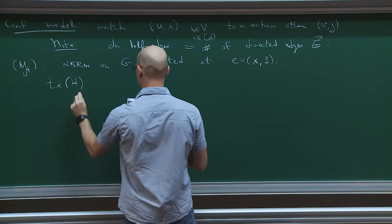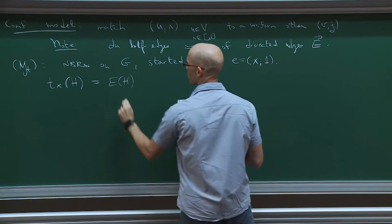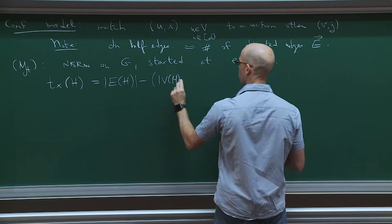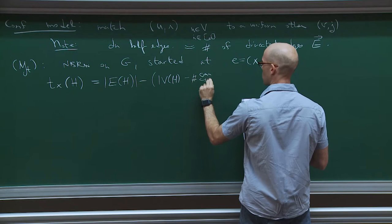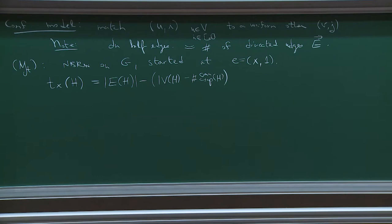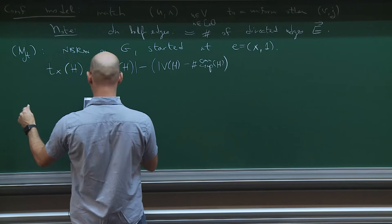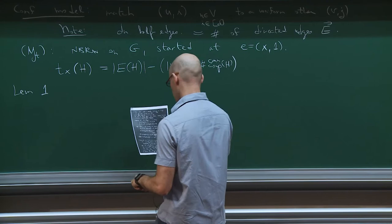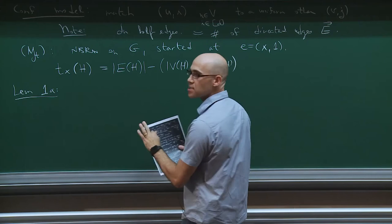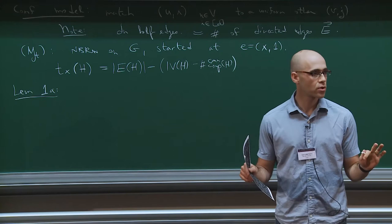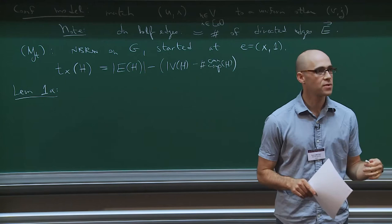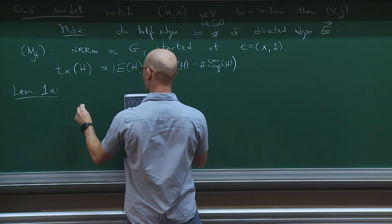One final piece of notation: if you have a graph h, the tree excess of h is the number of edges minus the number of vertices minus the number of connected components — just the number of edges you need to delete to make it into a tree. So if you have just one cycle, it's one edge. This lemma will show about half of you who haven't worked with the configuration model how one proves these things, and then we can proceed more quickly.